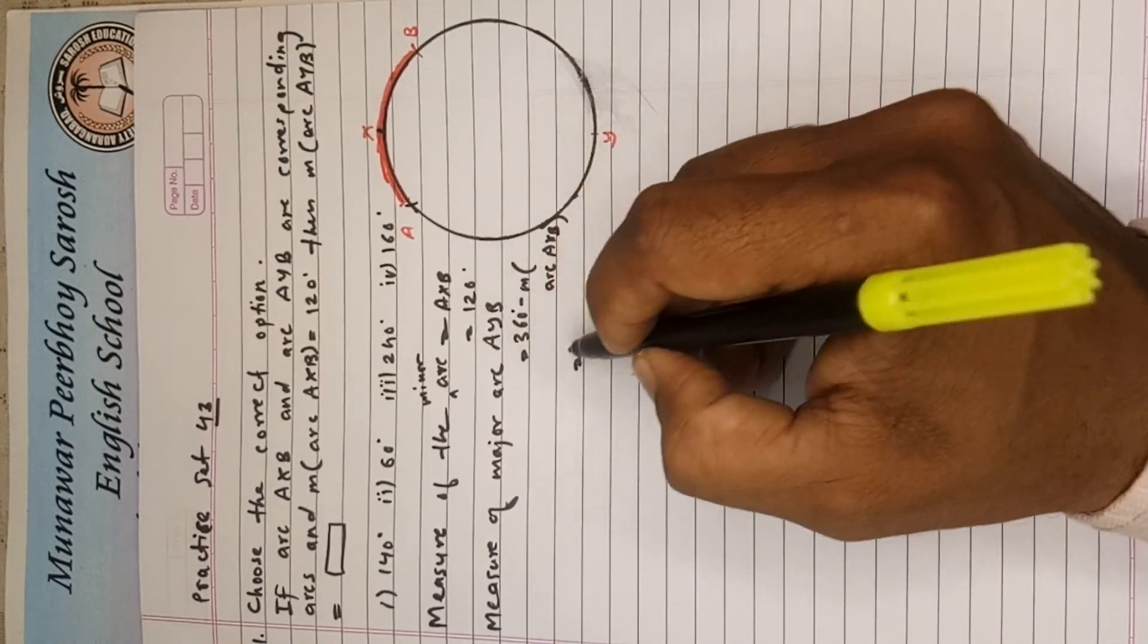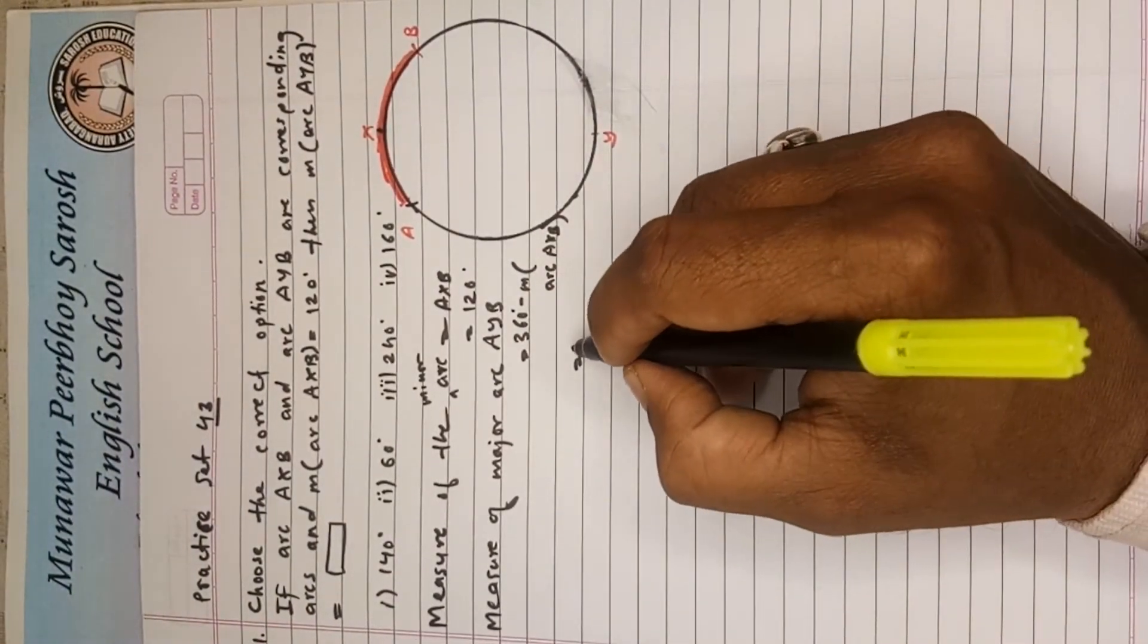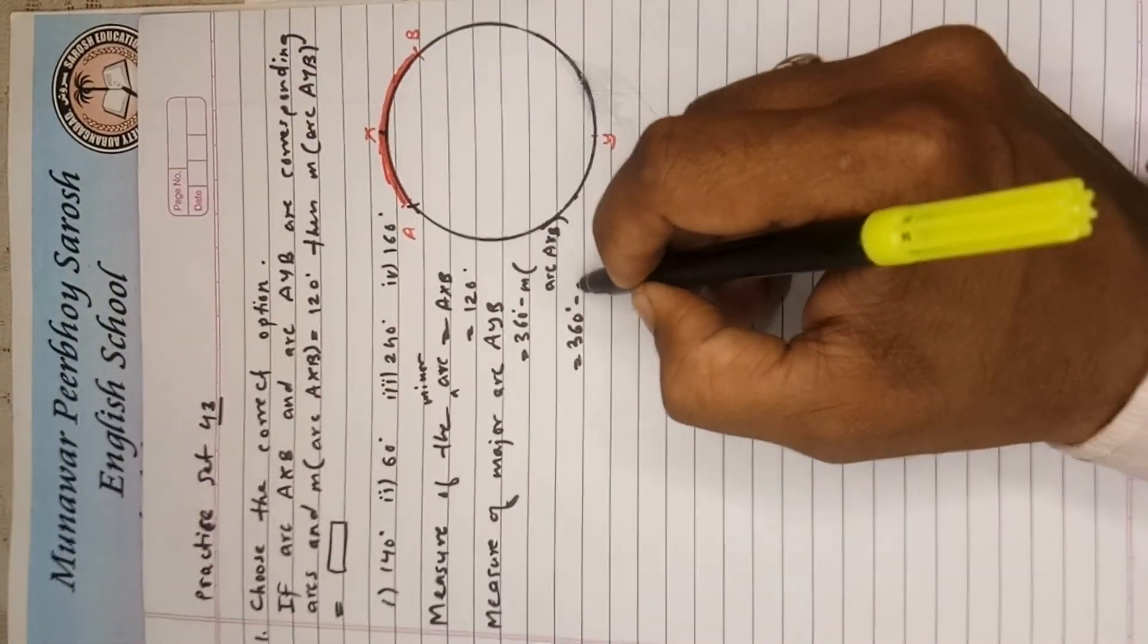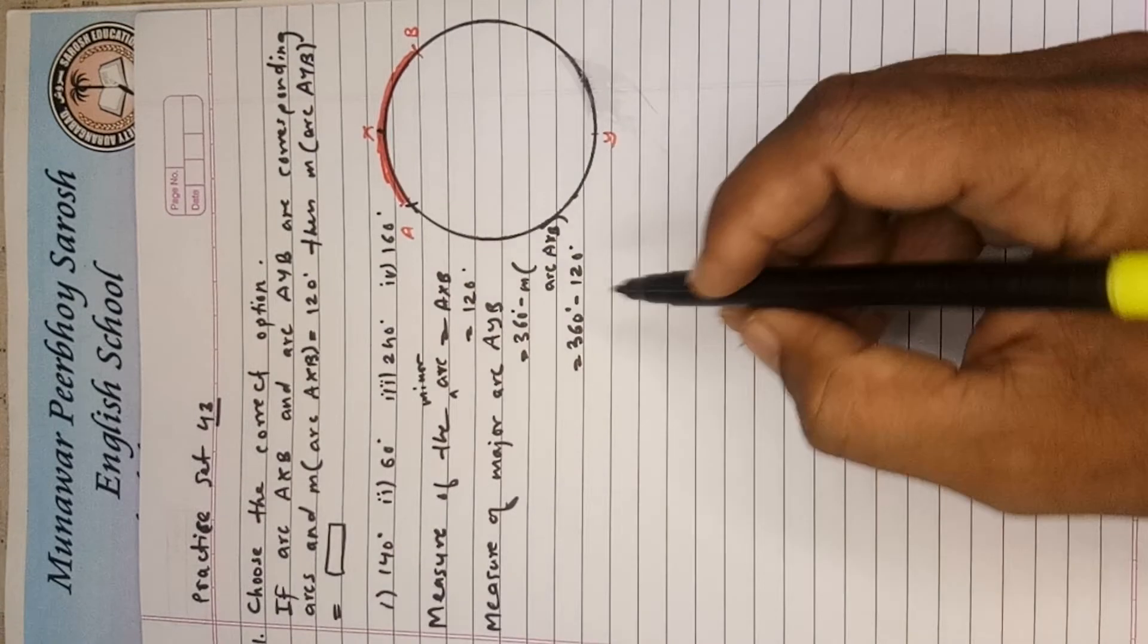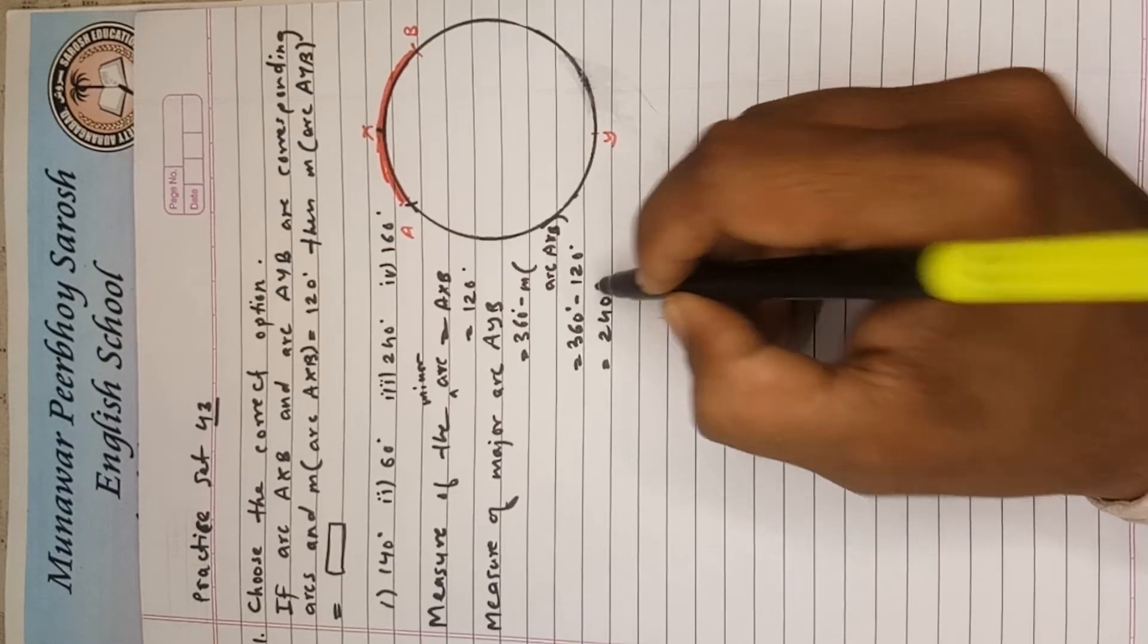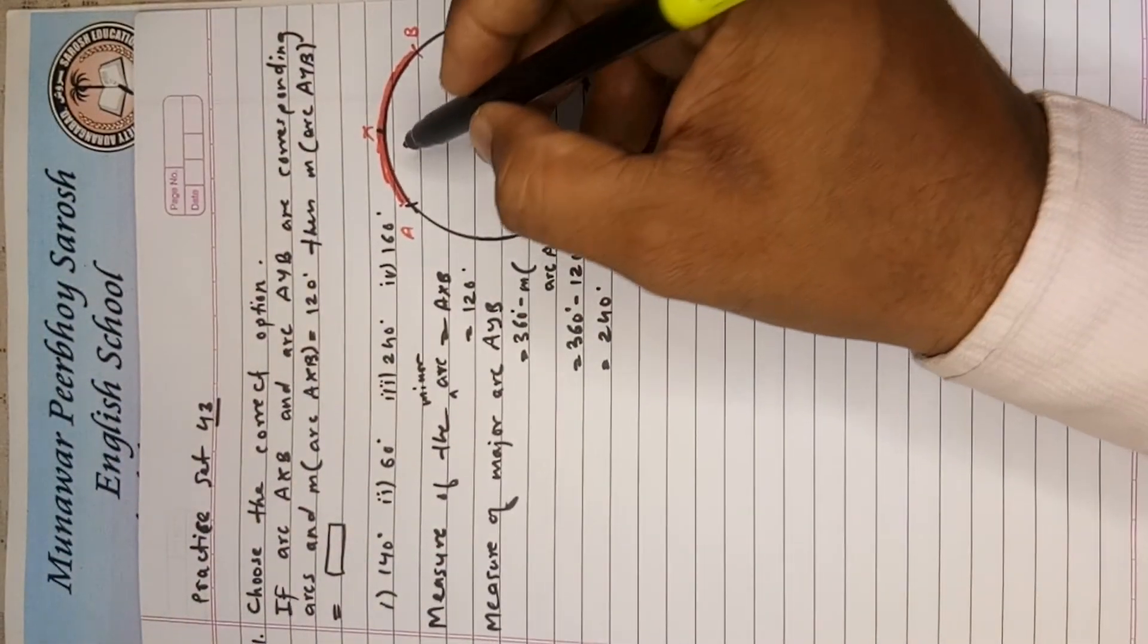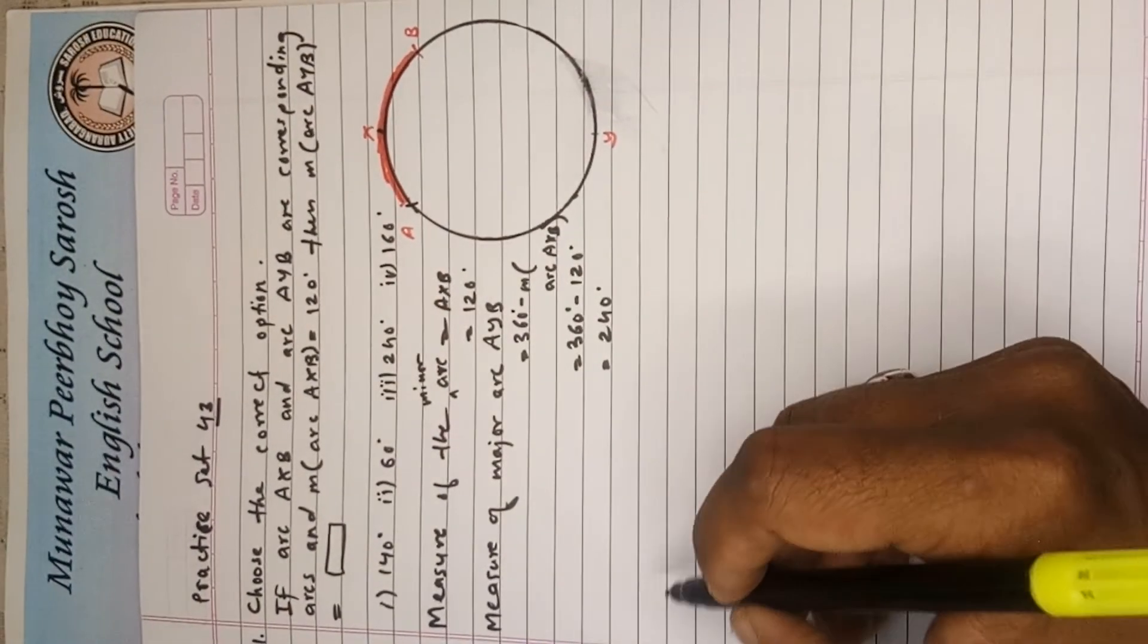Okay, so here now total is 360 degree. Measurement of a circle is of how much degree? 360 degree. So this is our 360 degree, and you have to minus from this, this measurement which is given to us, that is 120 degree. So this will give us the measurement of the remaining arc, that is the major arc. So 360 minus 120 is 240 degree. This is the measurement of this arc AYB. This is the bigger arc. So this 240 plus this 120 equals 360. Like this also you can tell the answer in this way.